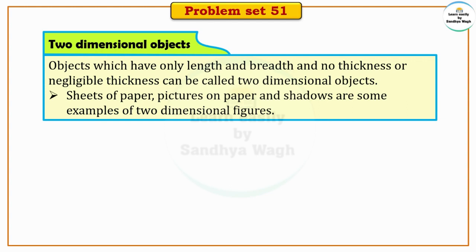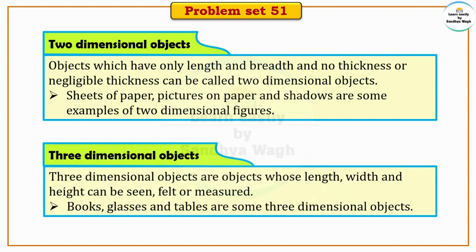Two dimensional objects have only length and breadth, and their thickness is either absent or negligible. For example, sheets of paper have length and breadth but negligible thickness. So a sheet of paper is a two dimensional object. Pictures on paper are also two dimensional objects. Shadows are also examples of two dimensional figures.